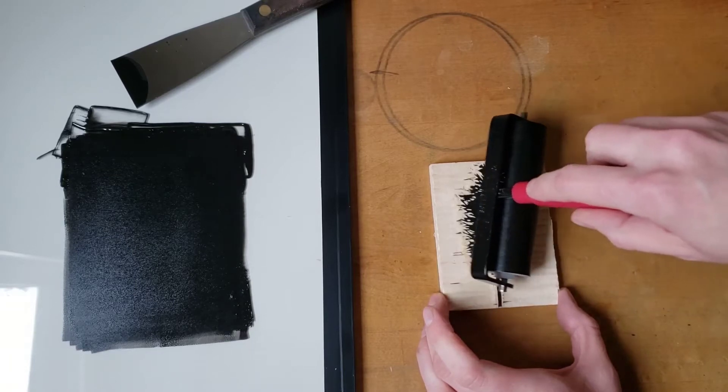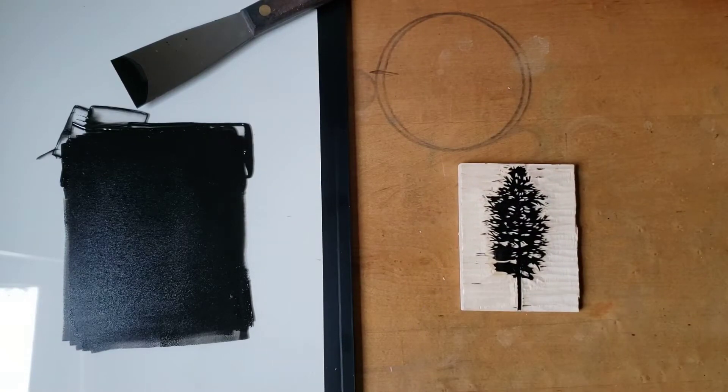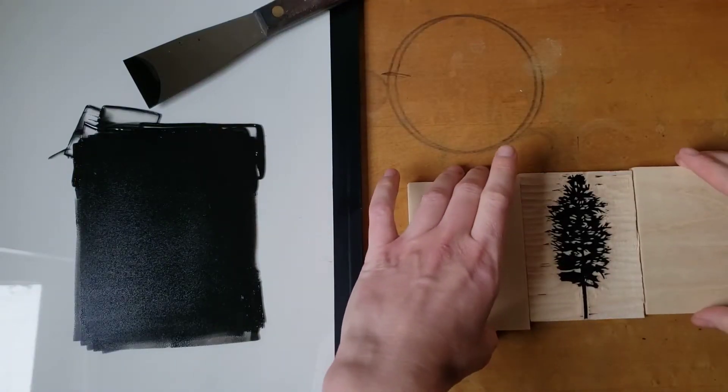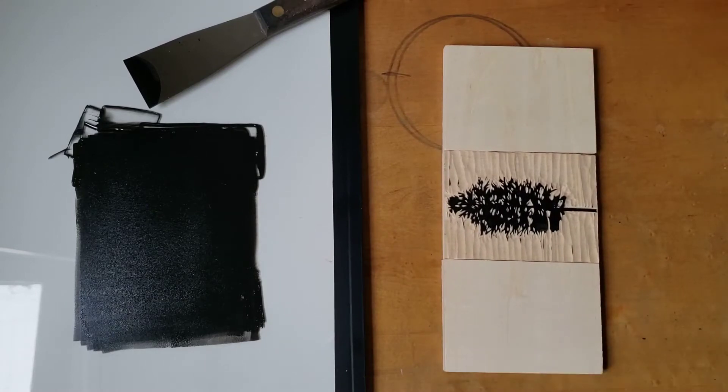For plates like this one, where a lot of material has been removed, there's a risk of the brayer tipping and accidentally inking a carved area. One trick to help with this is to place blocks of equal height on either side to act as runners for the brayer.